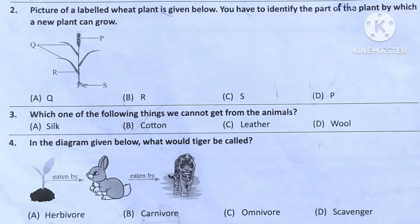Question number 2. Pictures of a plant are given below. You have to identify the part of the plant by which a new plant can grow. Letter B is wheat — it is a cereal and helps to make a new plant. Letter Q (R) is leaves — it helps the plant to make food.